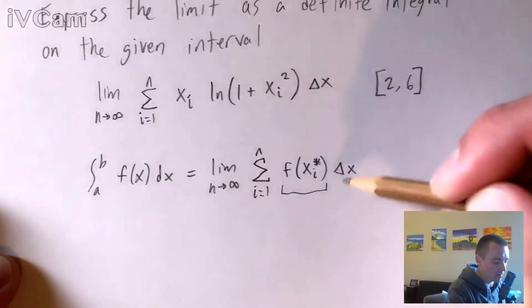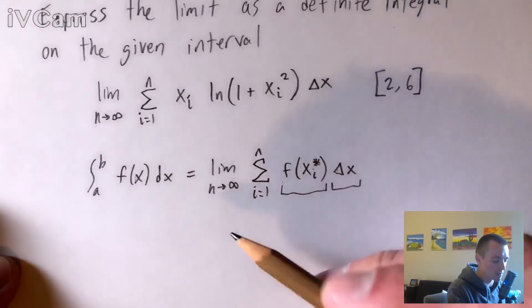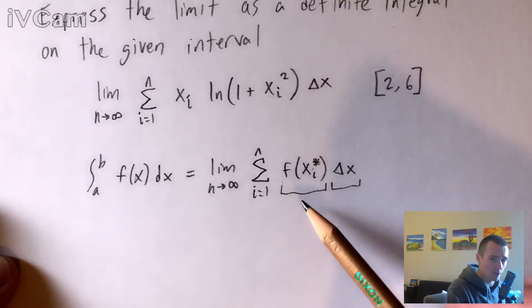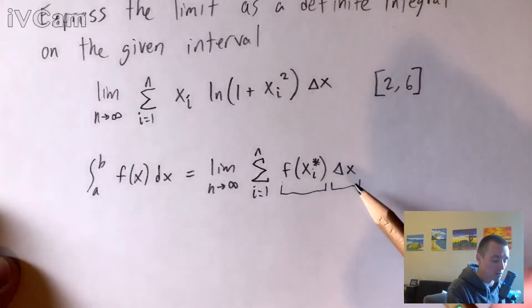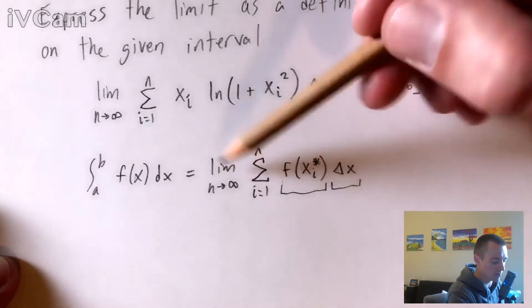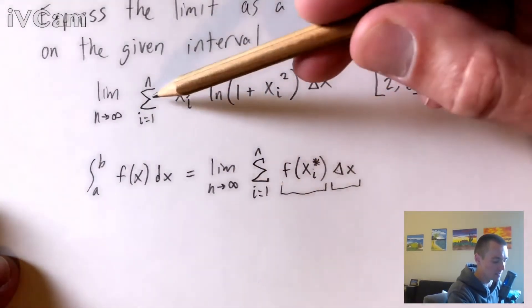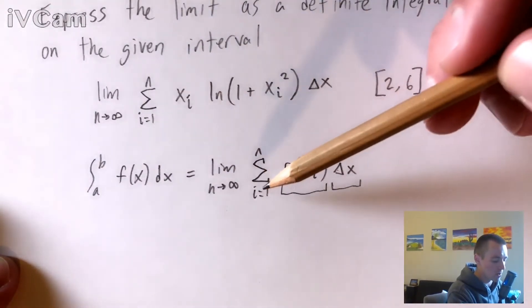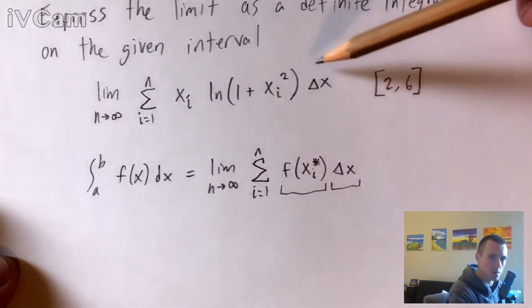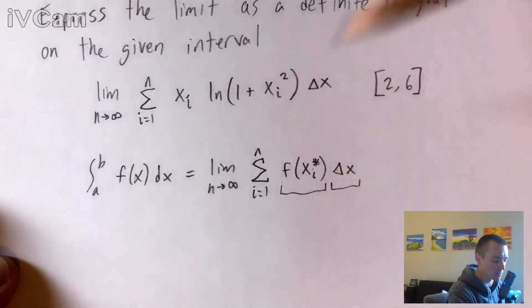So you want to think of this sum and this limit as the product of these two pieces here, our f of xi and our delta x. So we can see, looking here, we have the limit that lines up, we have the sum that lines up. What we want to do is compare all this stuff within this sum and this limit, compare it to this and match those up.